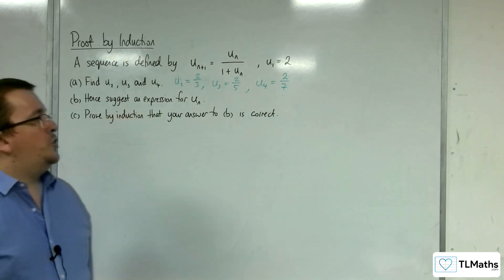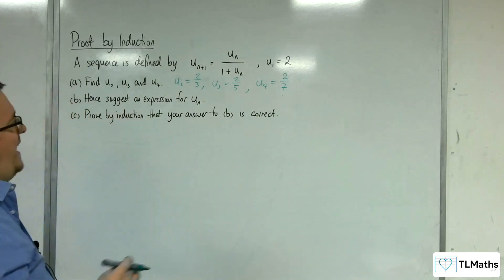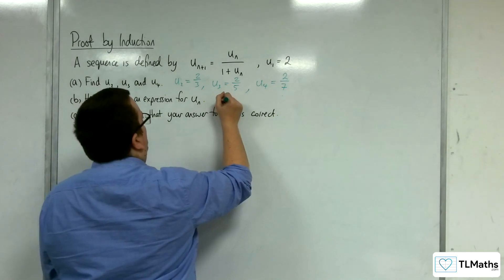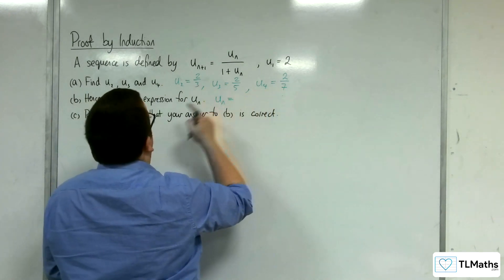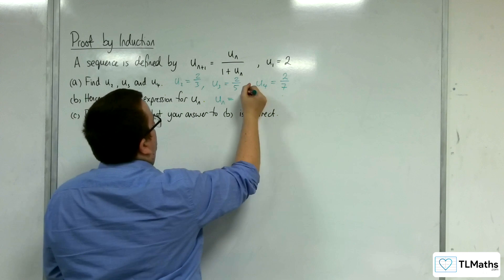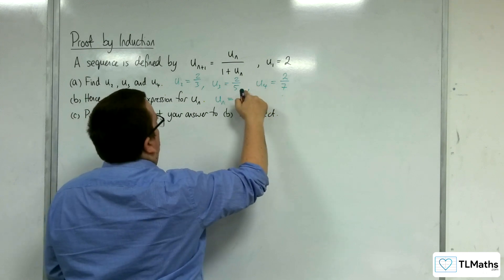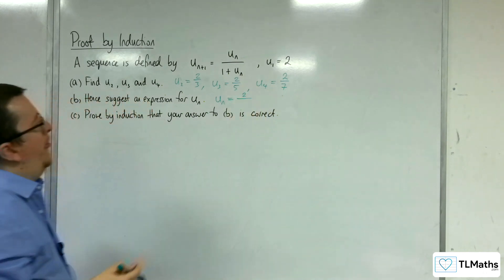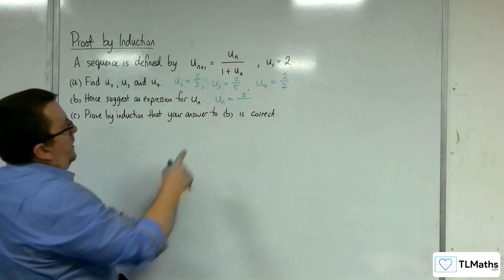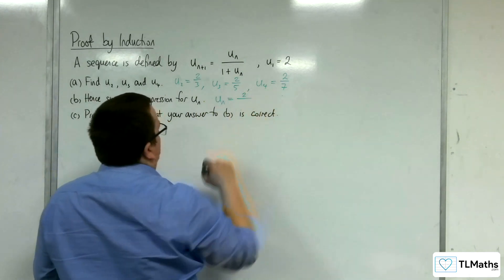Hence, suggest an expression for u(n), an nth term for this. The nth term, well, they've all got 2 in the numerator. So I'll have 2 in the numerator for here as well.